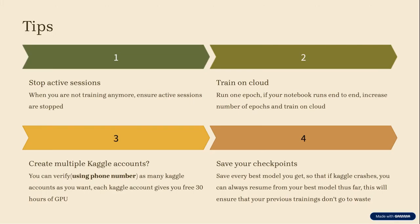A few add-on tips: please stop your notebook once you're done to avoid wasting GPU hours. Always test one epoch first — if the notebook runs cleanly end-to-end, then increase your epochs and let it train fully. Remember to save your checkpoints, because once your session ends and you haven't saved anything, it's gone and you need to restart. Some people create multiple Kaggle accounts to get extra GPU time — it works, but it's your call. Just remember each account needs a separate phone number.